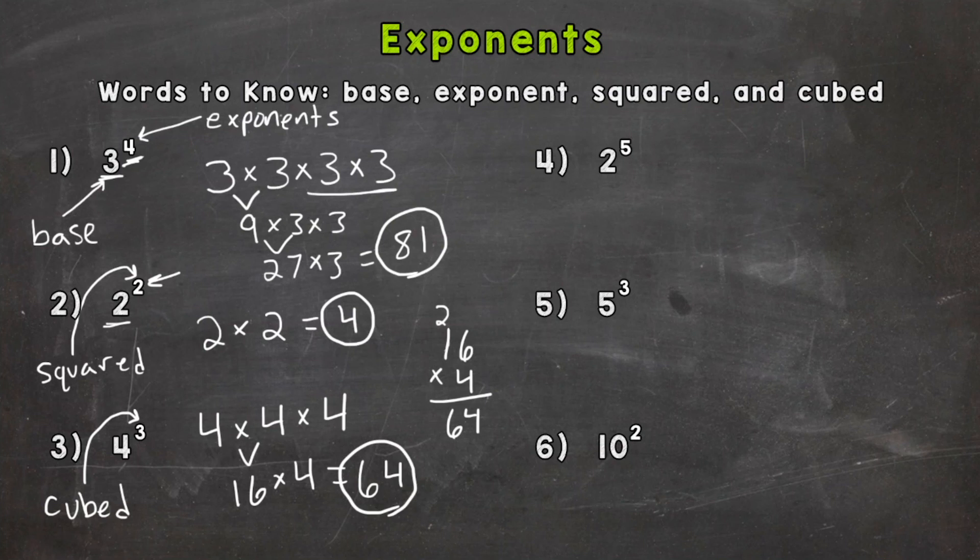So again, base is the big number that we expand out. The exponent is the little number in the top right that tells you how many times to expand it out. And then our two nicknames, squared, that's an exponent of two. And cubed, exponent of three.